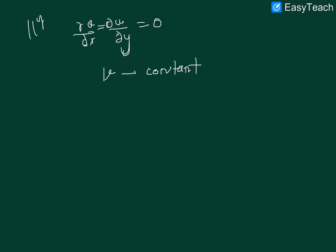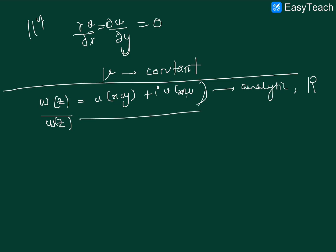This can be pretty handy to remember that if we are given some function of z which is in terms of u of x y and i v of x y, then if the complex conjugate of w is analytic in some region r, and w is also analytic in the same region r, then u and v are not functions of x and y.